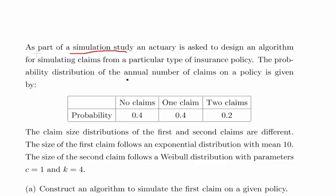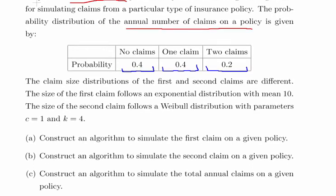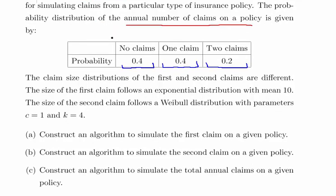The probability distribution of the annual number of claims on a policy is given as follows. On any particular policy, there is a 40% chance of no claims, 40% chance of one claim, and the probability of two claims is 0.2. Now obviously there could be more, but we will just go for a very simple set up here.